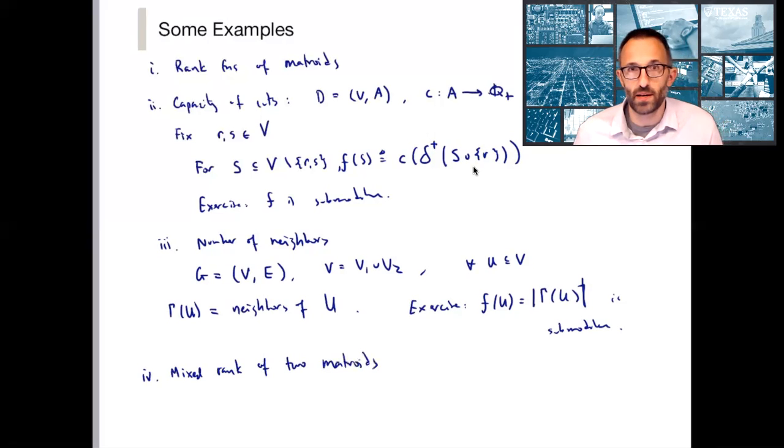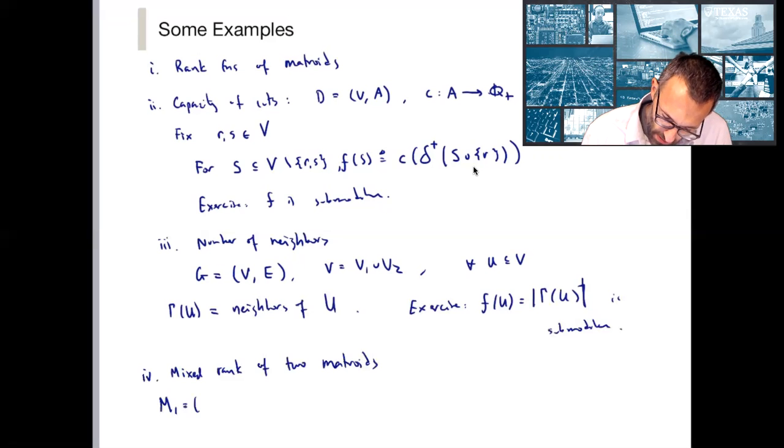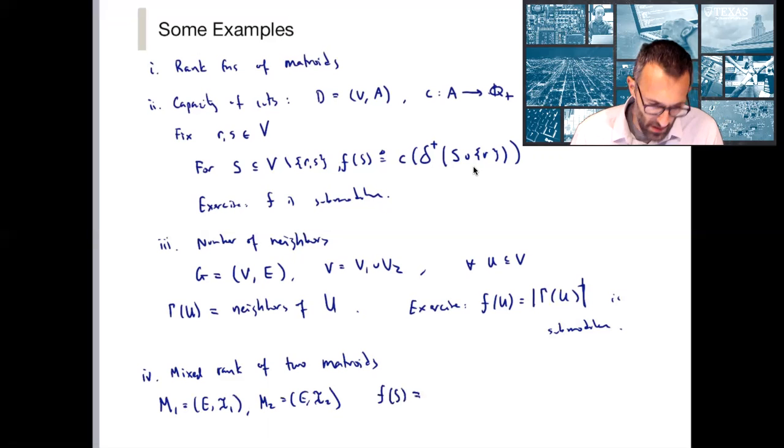So we spent a number of lectures developing results on matroid intersection. If M1 is a matroid and M2 is a matroid and these have a common ground set E, then the function F of S, which is equal to the rank in matroid one of S plus the rank in matroid two of the complement of S, E minus S, is submodular.